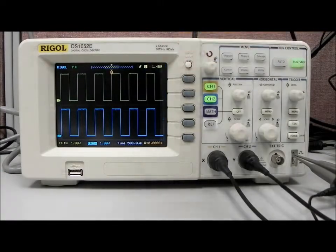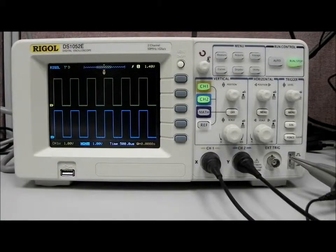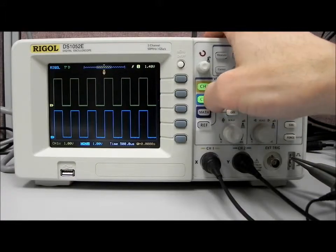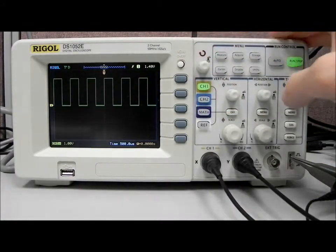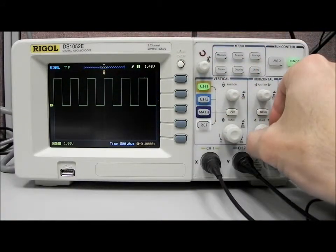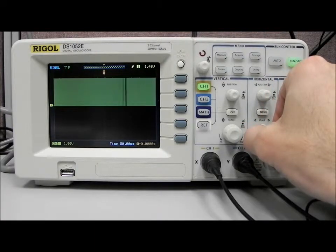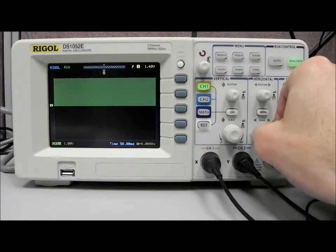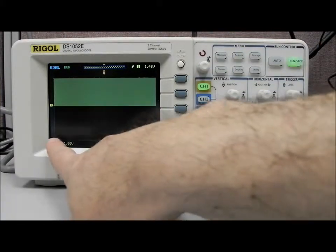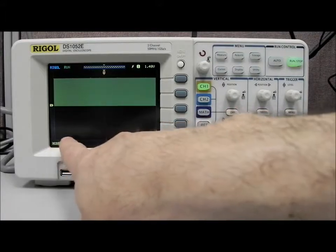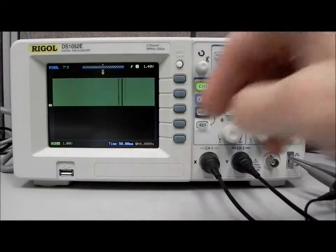Okay, should be all set. Now let's look at the sampling and memory features that we have available with this particular scope. We're going to shut down channel two and we're going to increase the time scale here. We're going to bring it to 50 milliseconds per time division. Now remember we have a one kilohertz signal, so we're looking at a period of about one millisecond.